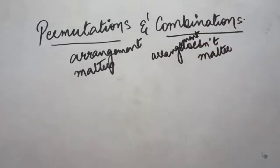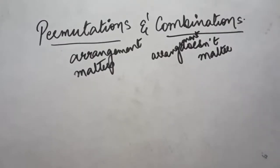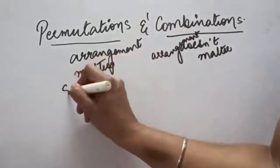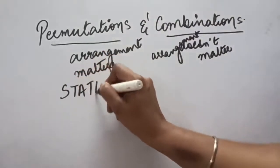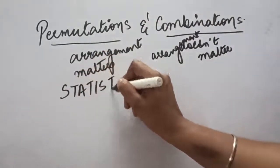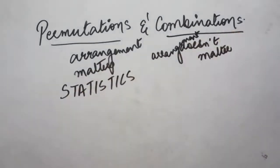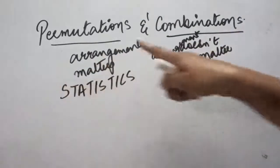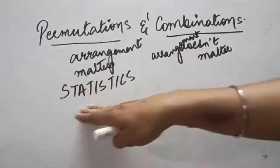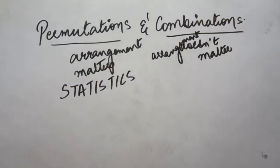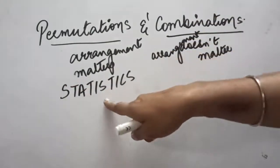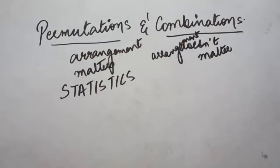These are two different concepts. In case of permutations, for example, you have to arrange certain letters — take the word 'statistics.' Here the arrangement of these letters matters. If you put S and T at the end, the meaning of that arrangement will not be there. So in such questions, we apply the permutation concept.